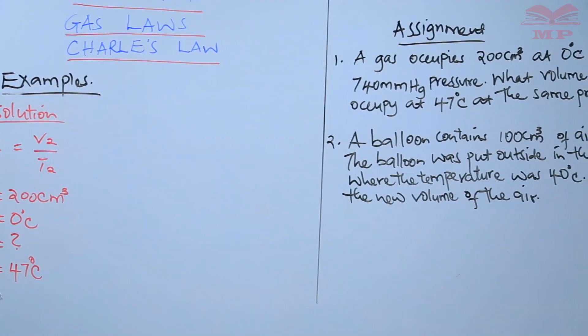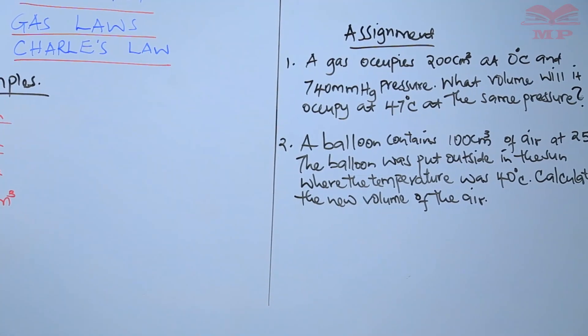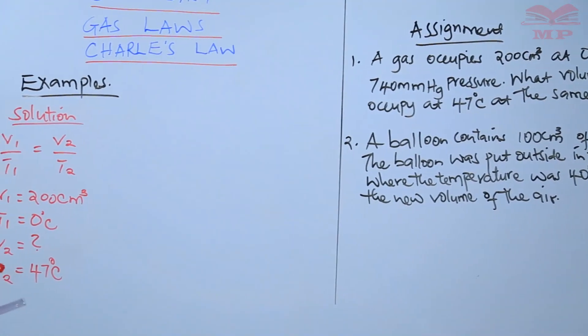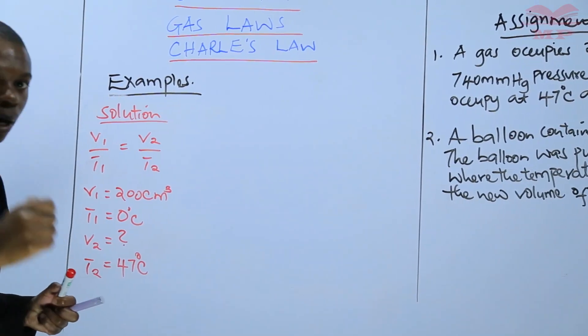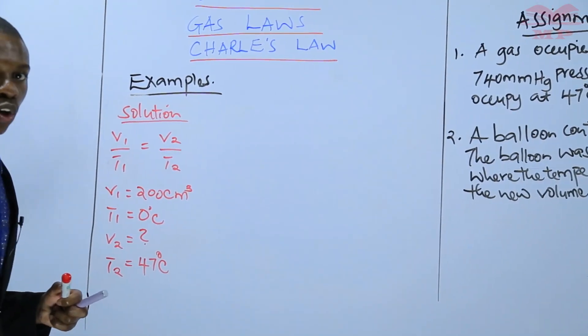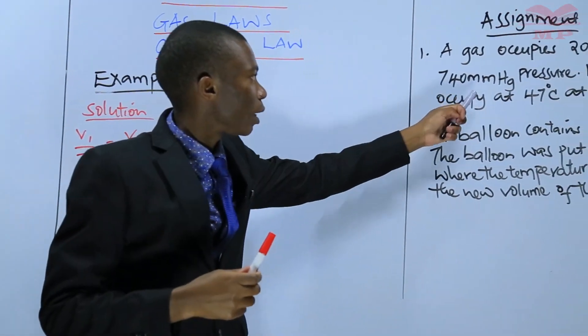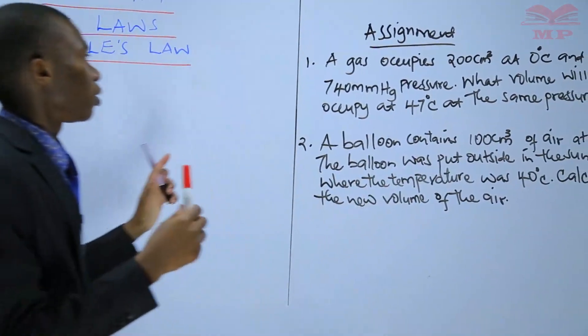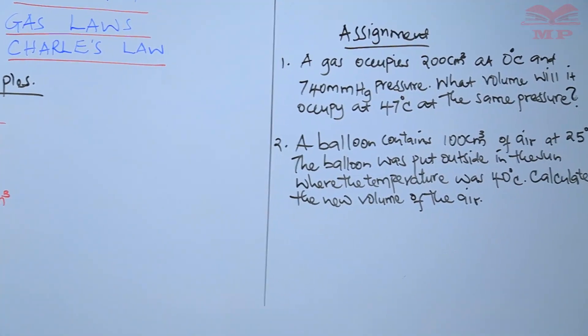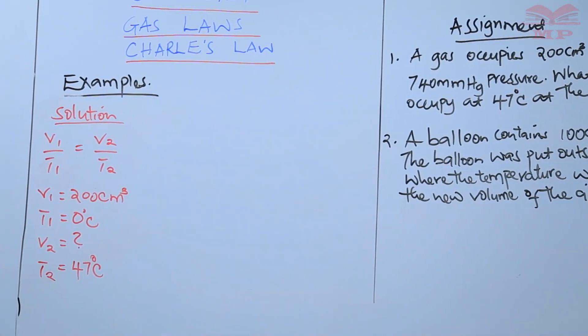Again the pressure, the pressure remains constant in Charles's law because we say that the volume of a fixed mass of a gas is directly proportional to absolute temperature at constant pressure. And that's why we have 740 pressure and the pressure remains the same. So the pressure, you're not supposed to use pressure anywhere. Remember to convert this temperature in degrees Celsius to Kelvin.